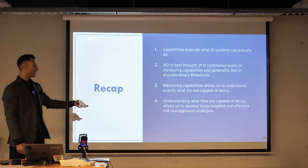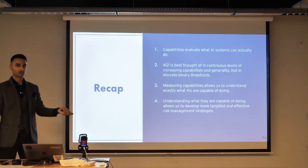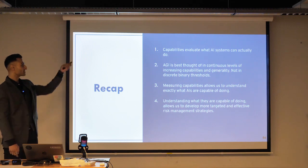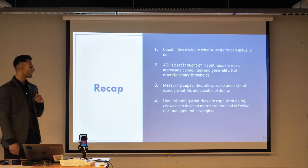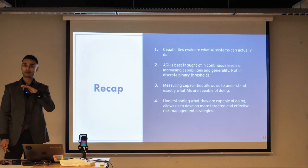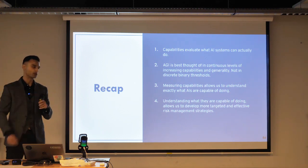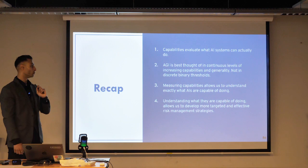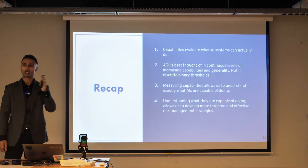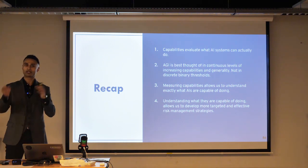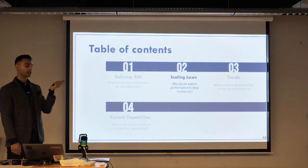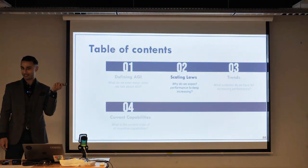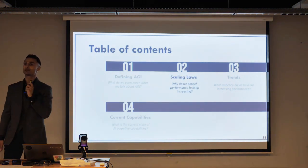A very quick recap of those slides: capabilities evaluate what systems can actually do. AGI is best thought of in continuous levels. Measuring capabilities allows us to concretely understand what we're talking about instead of getting lost in the abstract notions of intelligence. And understanding what they're capable of doing allows us to have targeted risk management strategies, both in the technical domain and in the governance domain. So next thing: scaling laws. Why do we expect these capabilities to continue increasing?